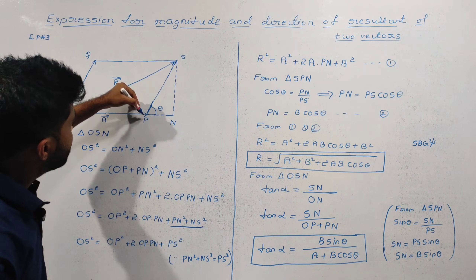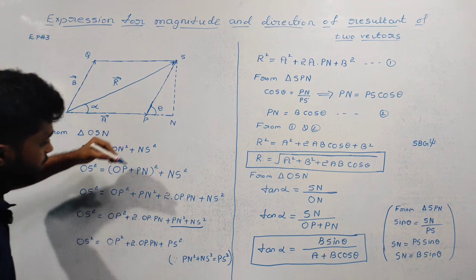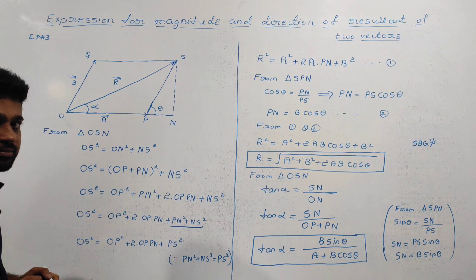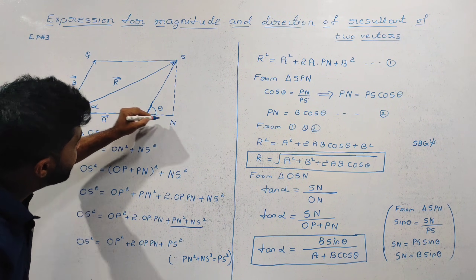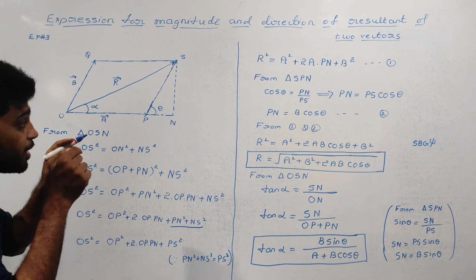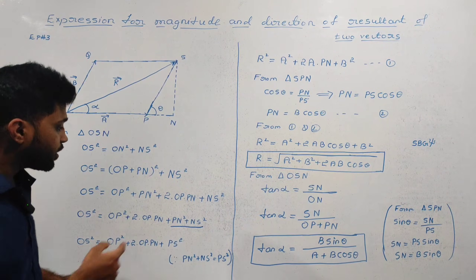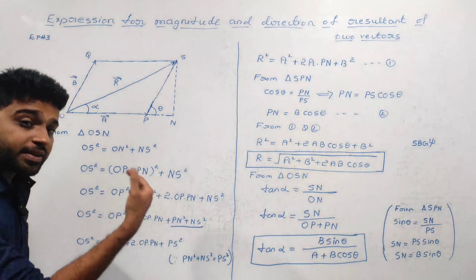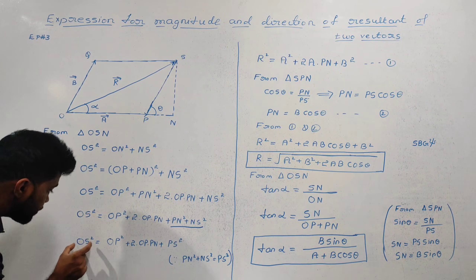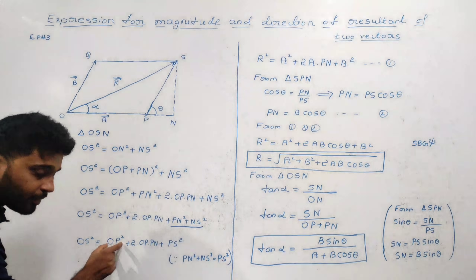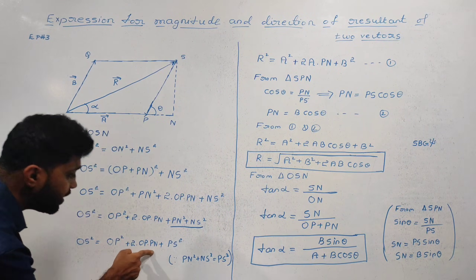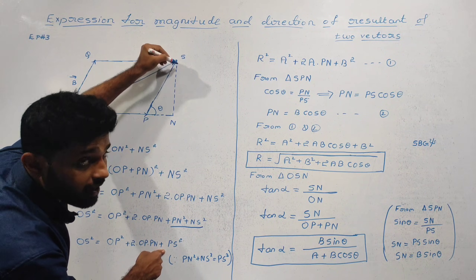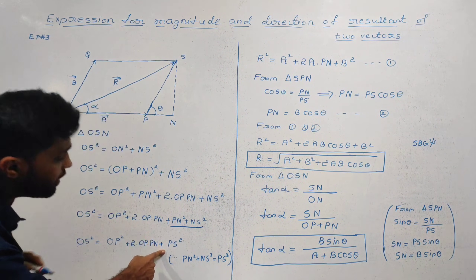From triangle SPN, using the Pythagorean theorem: PN squared plus NS squared equals PS squared. Substituting this result: OS squared equals OP squared plus 2 times OP into PN plus PS squared.